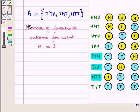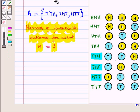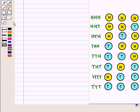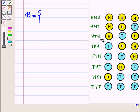The number of favorable outcomes for event A is equal to 3. Similarly we can write elements of event B. Event B is getting at least two tails. These are the outcomes favorable to event B.